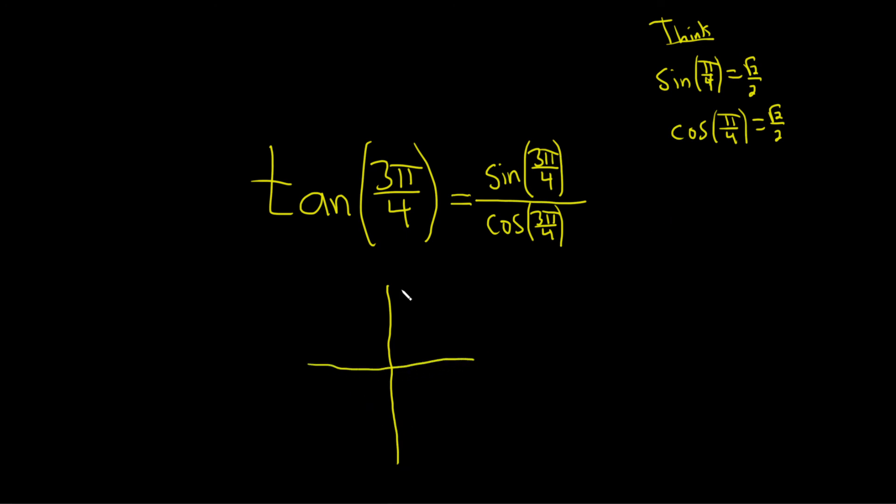So where is 3 pi over 4? Well, this is 0. This is pi over 2. This is pi. And think of pi as a number over 4. So you can write it as 4 pi over 4. And the reason this is useful is because now you can identify where 3 pi over 4 is. It's pi over 4 less than 4 pi over 4. So it's somewhere here in quadrant 2. So this is 3 pi over 4.